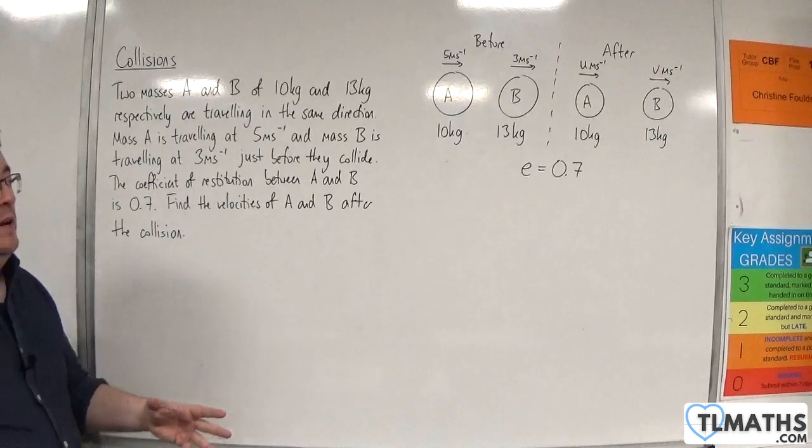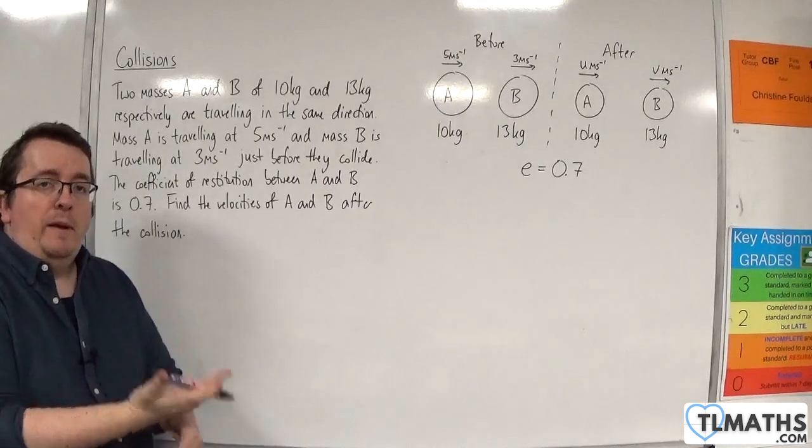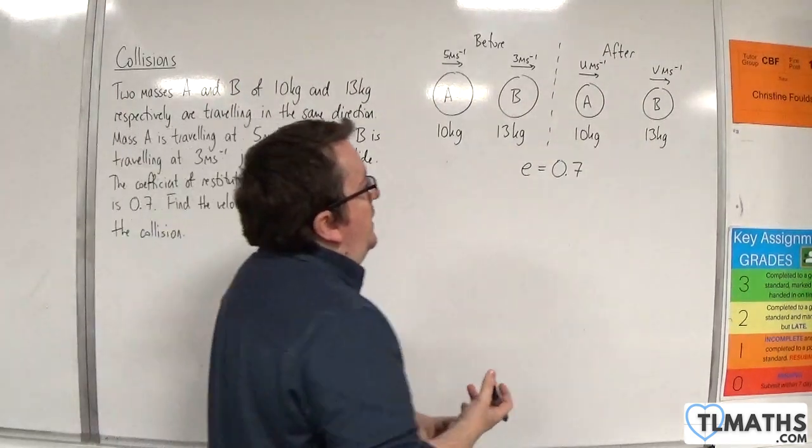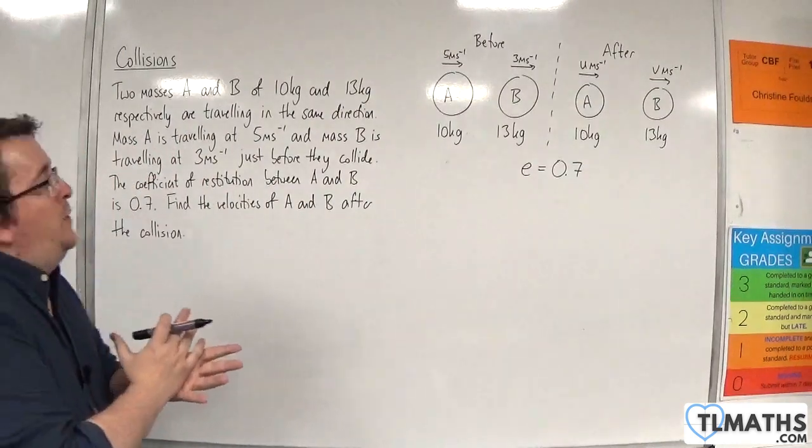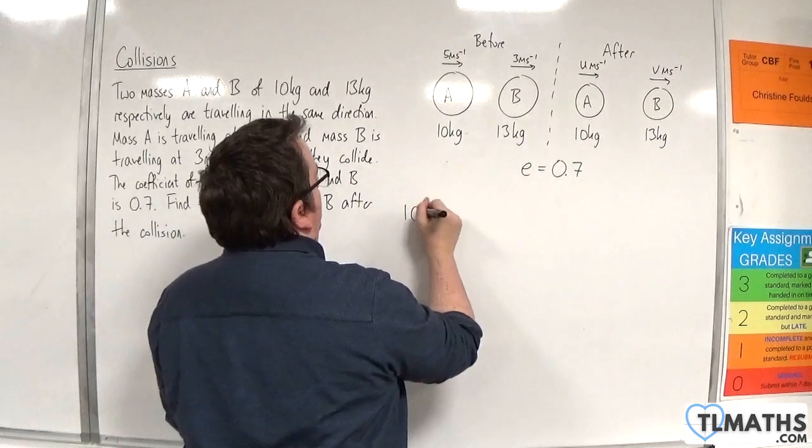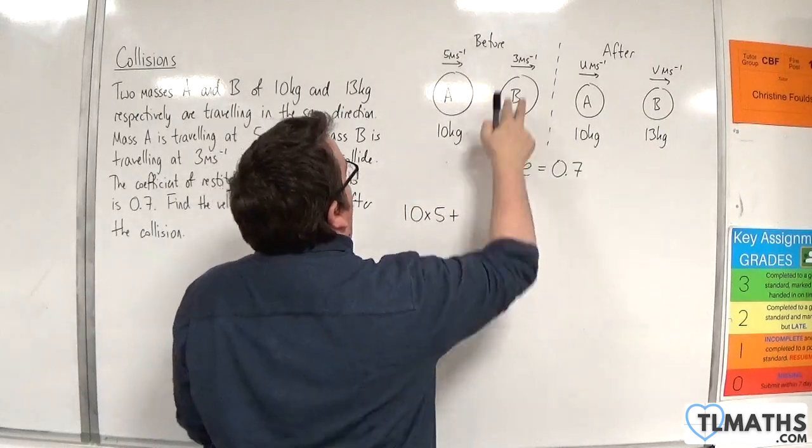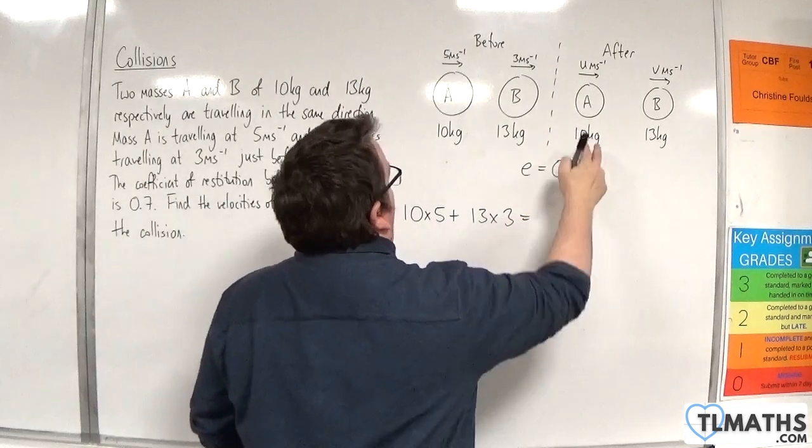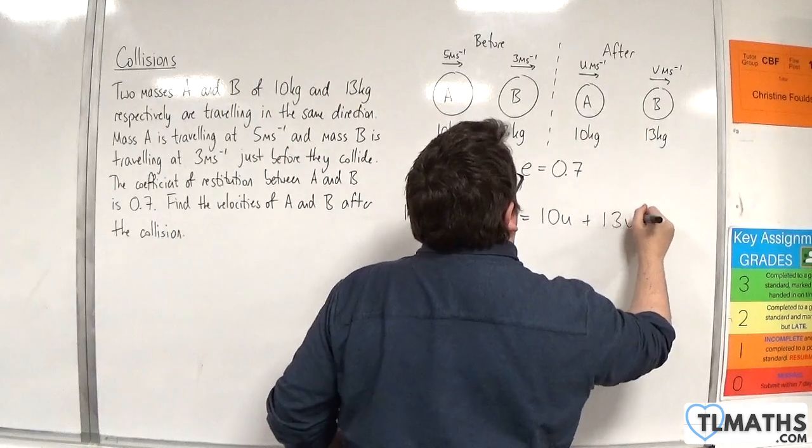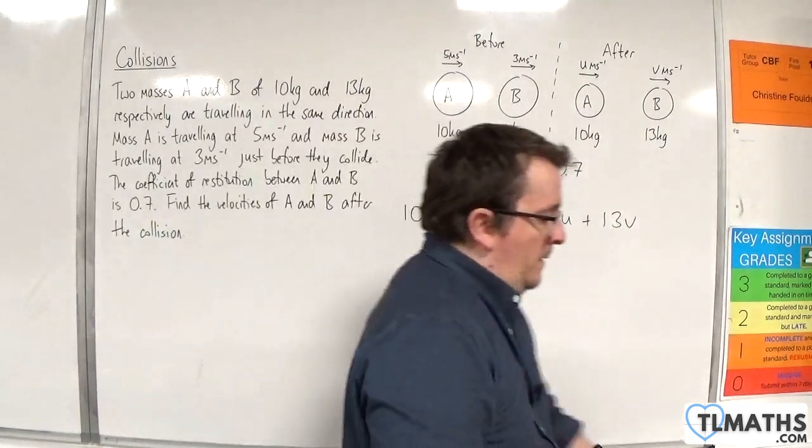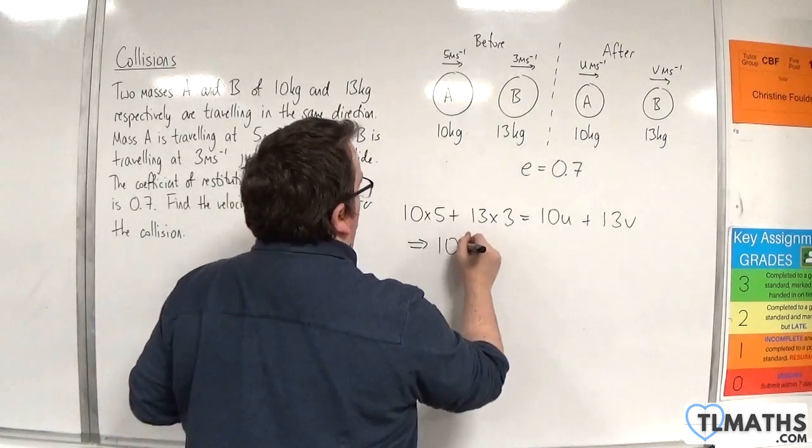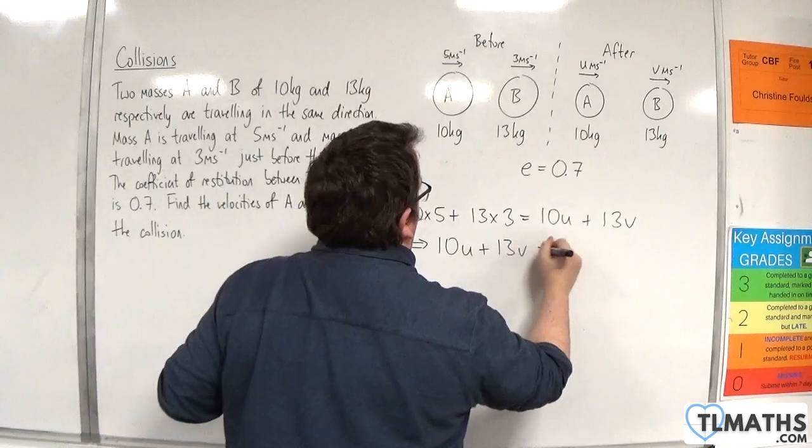So we've got two things that we can work with: the conservation of linear momentum and the calculation for E. So the conservation of linear momentum, let's do that first. That would be 10 times 5 plus 13 times 3 must be equal to 10 times U plus 13 times V. So we've got 50 plus 39 is 89, so 10U plus 13V is 89.